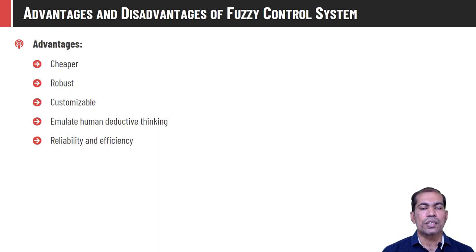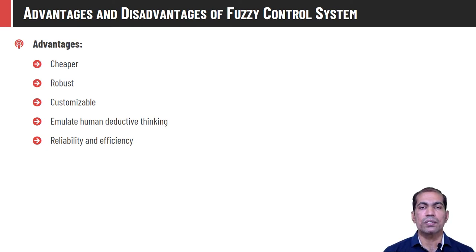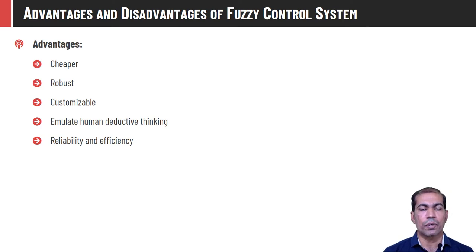Advantages of fuzzy logic control systems are that they are quite cheaper and robust because they can easily handle imprecision in data. They are customizable — you can design your own fuzzy membership functions, determine the range of your own fuzzy subsets, and fine-tune accordingly. Fuzzy logic works just like a human thinking process and is reliable and efficient, even when there is variability in input parameters.